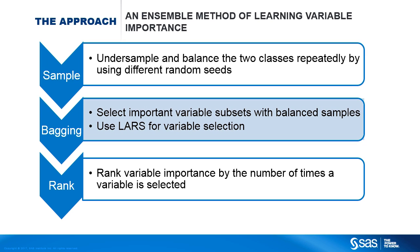The bagging step selects the best subset of variables for each balanced dataset. For this project, we chose LARS for variable selection. One reason is that it is a Lasso-type method, which reduces the variance of estimates by shrinking the coefficients toward zero, so it performs better in the presence of collinearity. It can certainly be replaced by other classifiers like decision trees, random forests, gradient boosting, etc. In the last step, we counted the number of times that a variable was selected in the bagging process and ranked the variable importance by frequency.